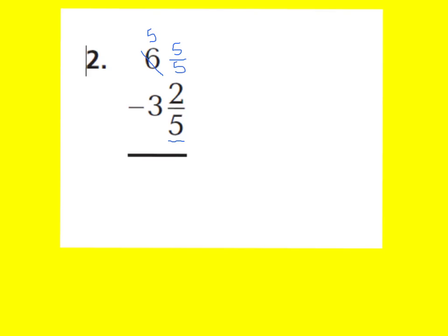Let's subtract. 5 fifths minus 2 fifths — 5 minus 2 is 3, and I keep my denominator the same: 3 fifths. Now I can subtract my whole numbers. 5 minus 3 is 2. So I would have 2 and 3 fifths for my answer.